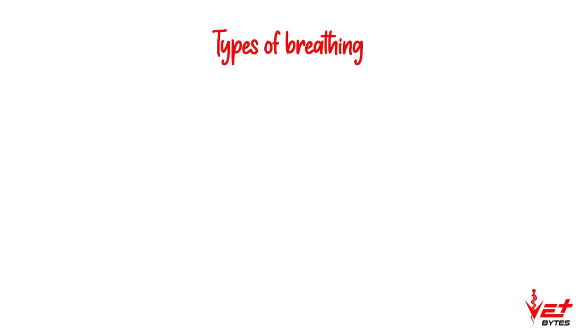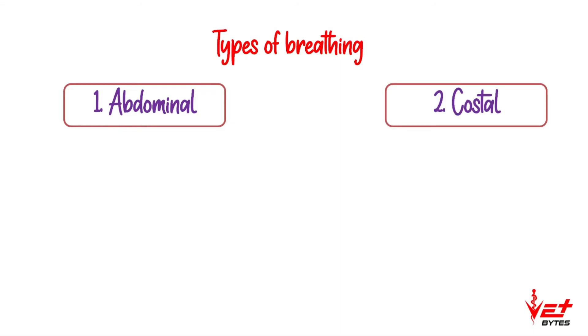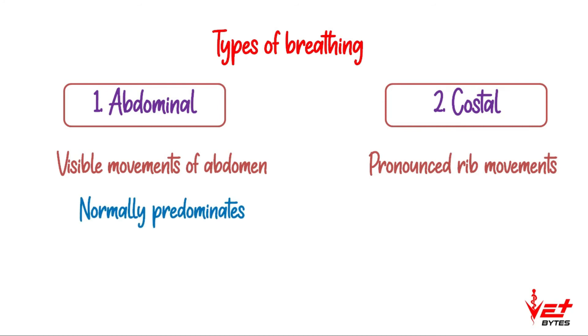There are two types of breathing: abdominal and costal. In abdominal breathing, visible movements of abdomen are seen. In costal breathing, rib movements are seen. Abdominal type of breathing predominates during normal quiet breathing.